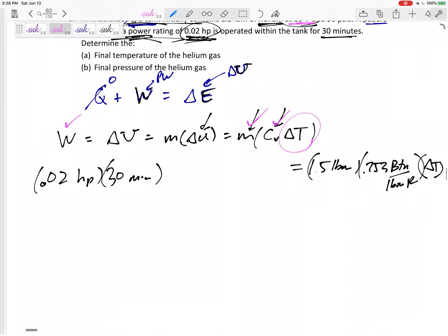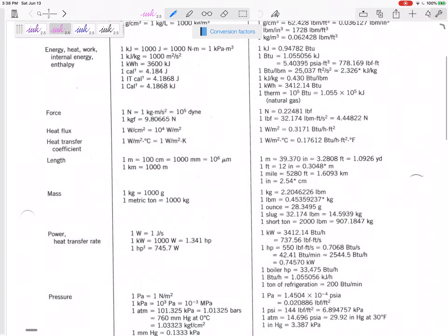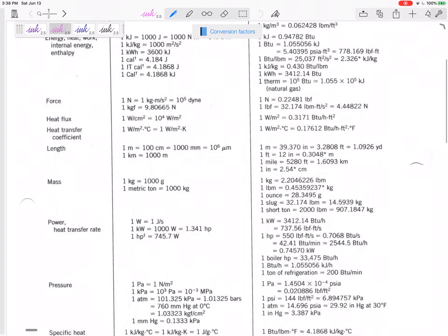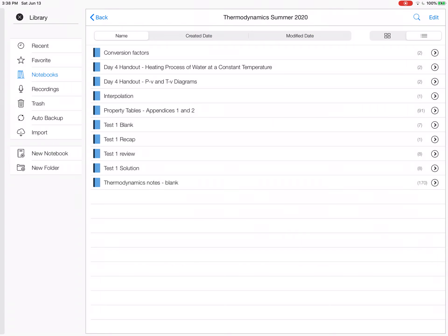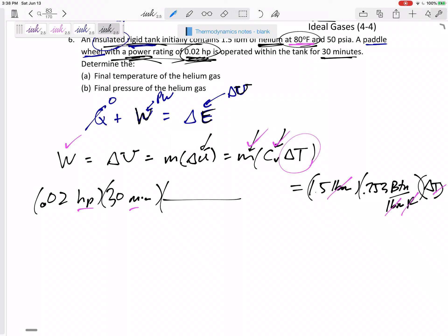All right, so on the left-hand side, I've just got BTU, right? On the right-hand side, I have BTU. How can I get BTU from horsepower and minute? Let's go to our conversion factor sheet. Maybe power or some of these right here. I've got horsepower and minute. Yeah, maybe that one right there. One horsepower is 42.41 BTU per minute.